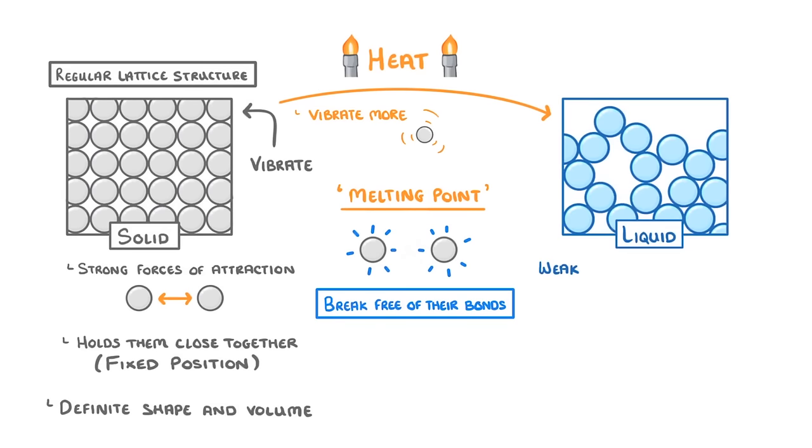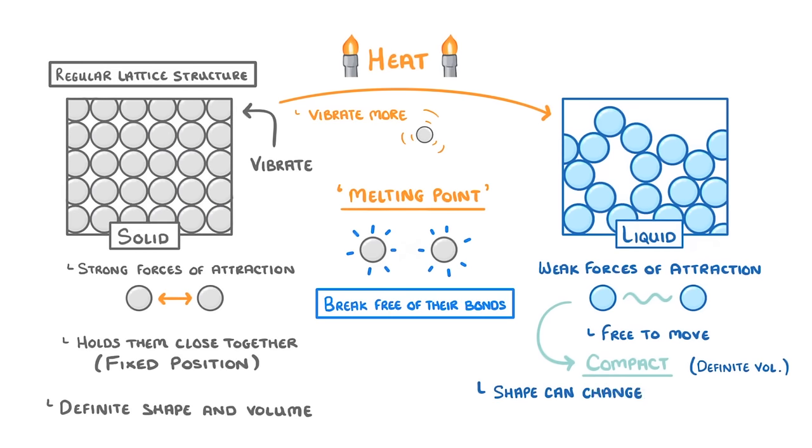In liquids there are only weak forces of attraction between the particles, so they're free to move around and are arranged pretty randomly. However, the weak forces of attraction do mean that the particles tend to stick together and are fairly compact. This means that they have a definite volume even though their overall shape can change, allowing them to flow to fit a particular container.